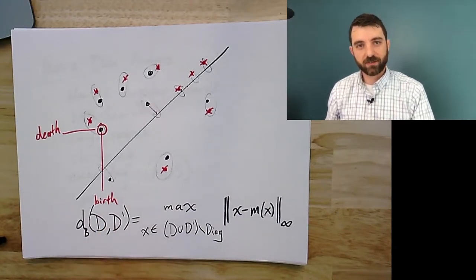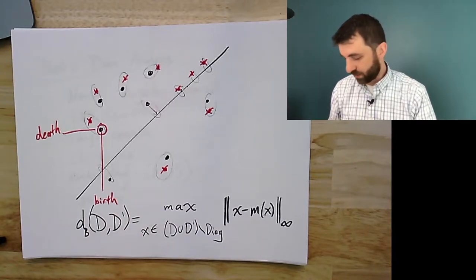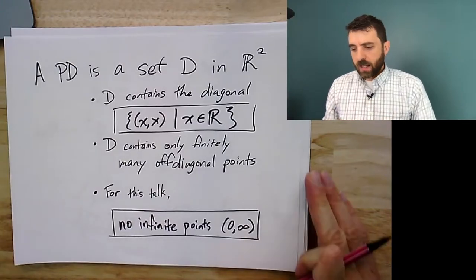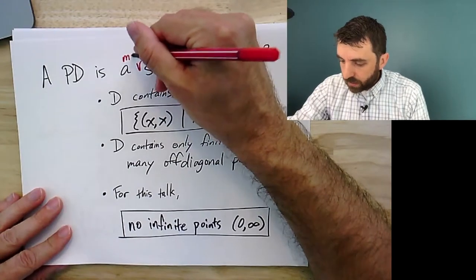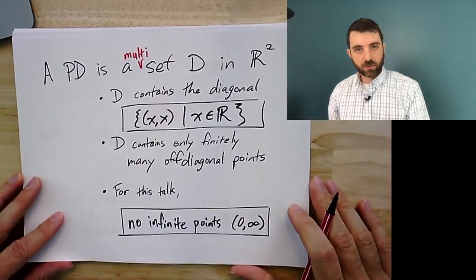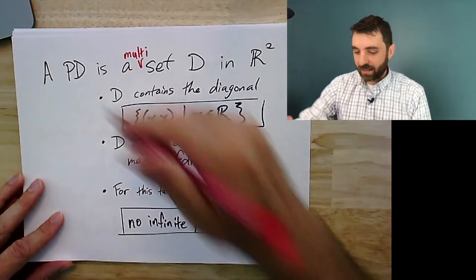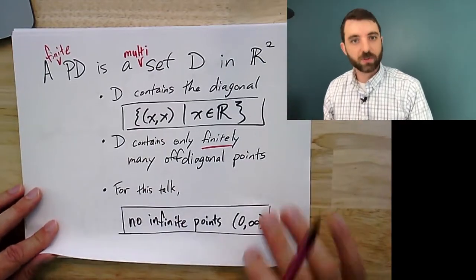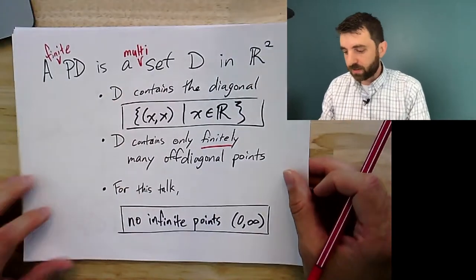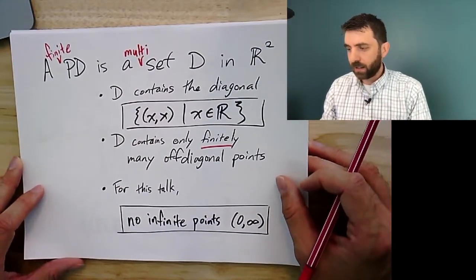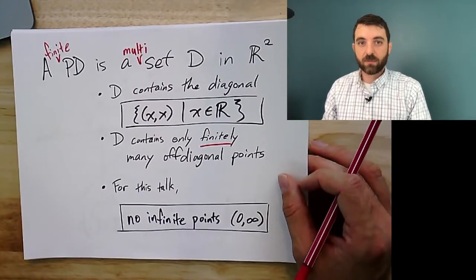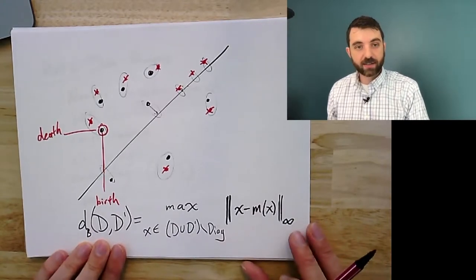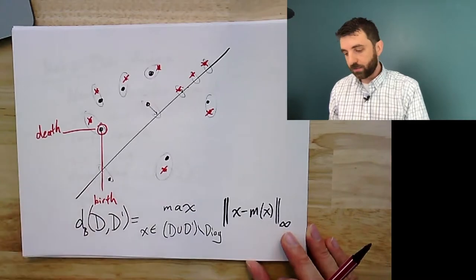One thing I missed: persistence diagrams are not just sets but multi-sets — this is going to be absolutely crucial to everything we do. We'll assume all diagrams are finite and they could be multi-sets, so I allow multiplicity of points. In standard topological data analysis you get multiplicity in the diagram. This is the bottleneck distance between two persistence diagrams — well defined, solved by matching algorithms.